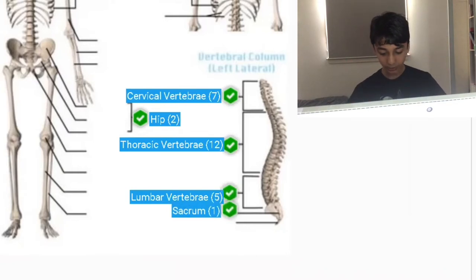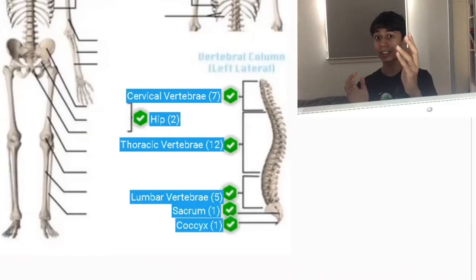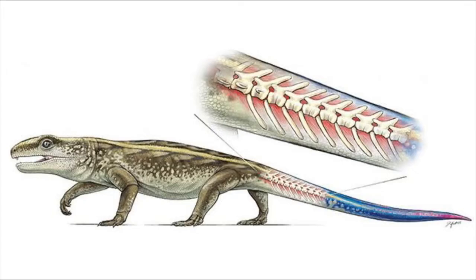The sacrum which there are five of and it stabilizes the pelvis and then the coccygeal vertebrae which on the squeeze is known as the coccyx. There are four coccygeal vertebrae and they are basically what is left over of our ancestors tails. Obviously other vertebrates contain more than four coccygeal vertebrae.